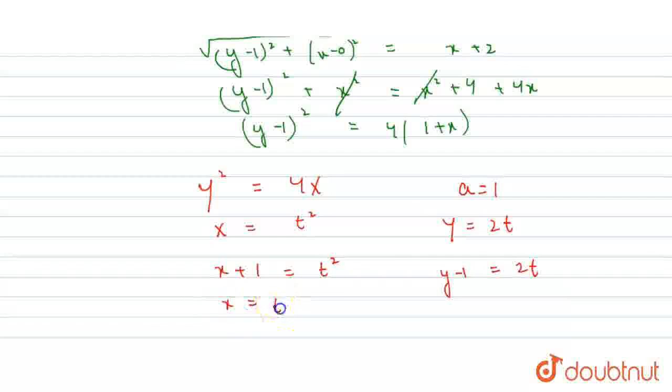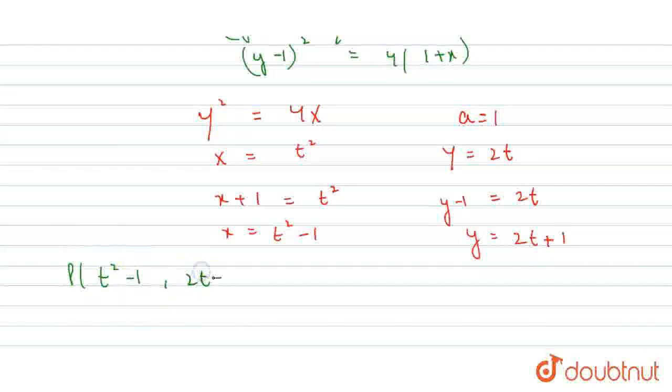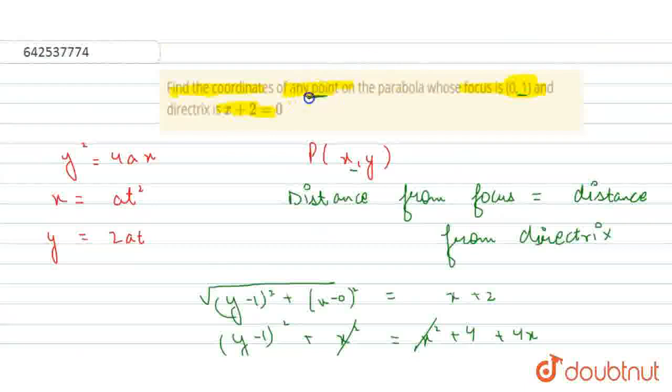x equals to t square minus 1 and y equals to 2t plus 1. Here are the coordinates, point P(x, y) is t square minus 1, 2t plus 1. These are the coordinates of any point on the parabola whose focus is this and directrix equation is this. This is the answer.